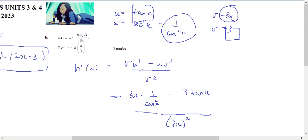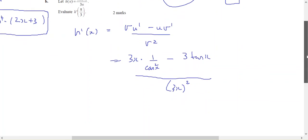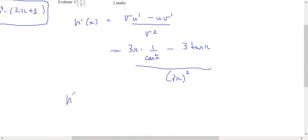So that's going to give me 1 of my 2 marks. I actually have to evaluate the derivative at x equals pi on 3. So h dash of pi on 3 will be 3 times pi on 3,